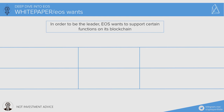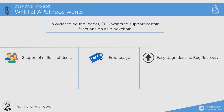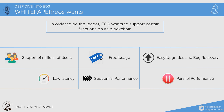What are the main targets of EOS? The team thinks that in order to become the best in the smart contract space, they need to support usage by millions of users, make transaction fees non-existent, make it easy to upgrade and recover from bugs, and make the blockchain fast enough to process millions of transactions per second.